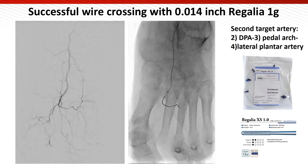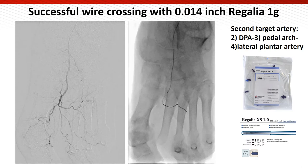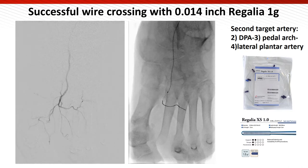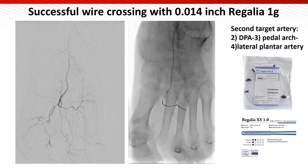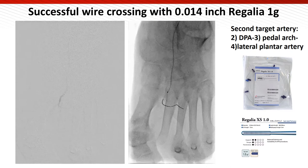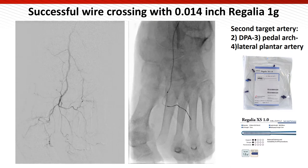Regalia, which has a 1g tip load with hydrophilic coating, is useful especially for below-the-ankle revascularization, because the BTA region is generally tortuous. Based on my experience, Regalia wire is the best wire for pedal artery crossing.